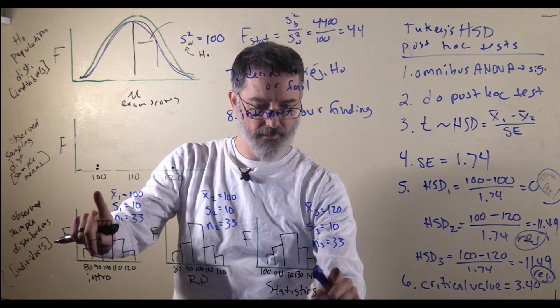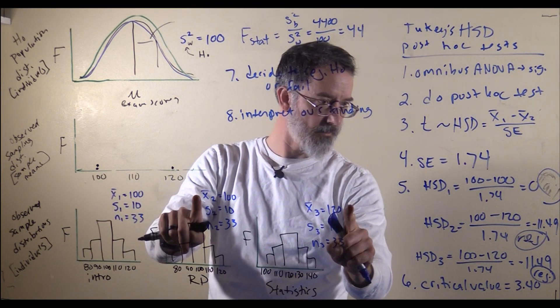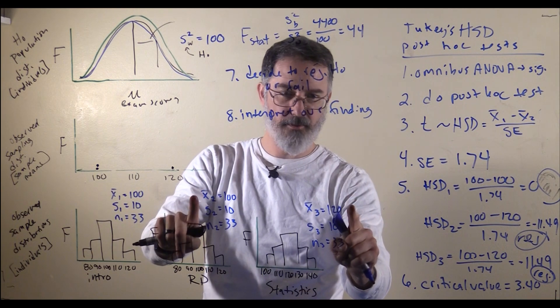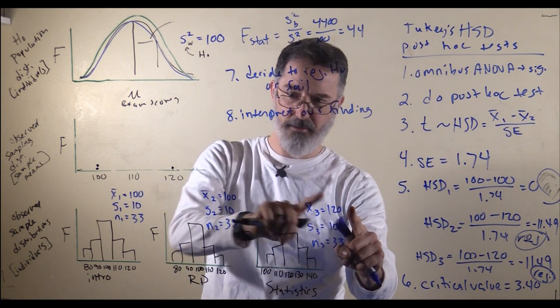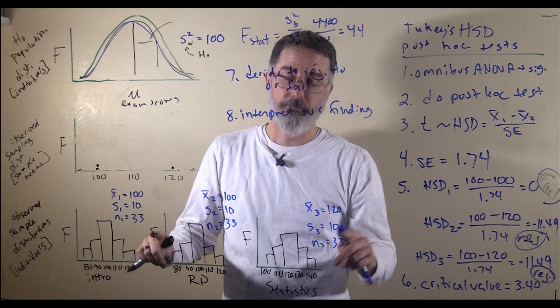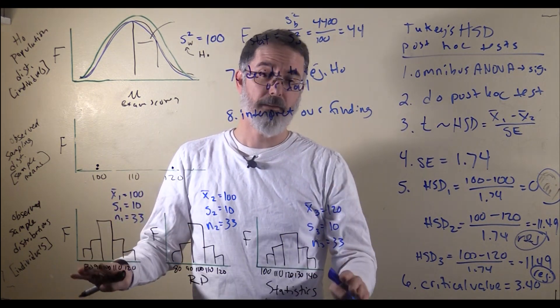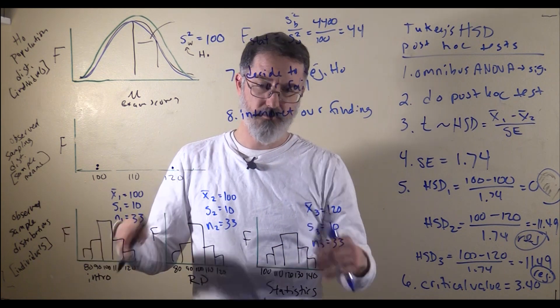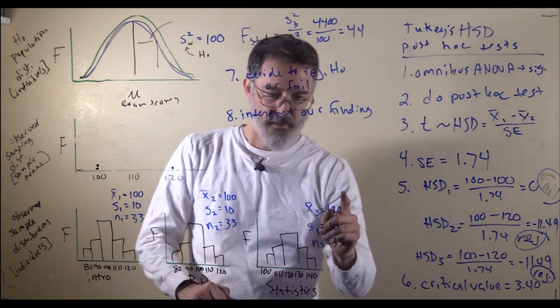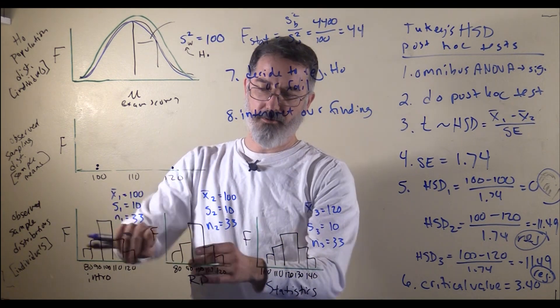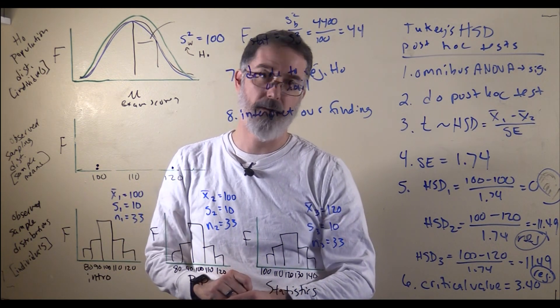For our third test, that compares statistics and research design. That was also statistically significant. We rejected the null hypothesis. We interpret this one as statistics is easier than research design. Overall, our omnibus ANOVA was statistically significant. Then we did our post-hoc tests, and we found using our post-hoc tests that statistics was easier than research design and intro, but we were not able to conclude anything about how those two compared with one another.